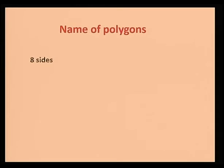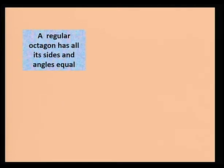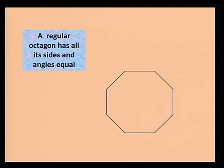A polygon with eight sides is called an octagon. This is an octagon. A regular octagon has all its sides and angles equal — you can see here all the sides and angles are equal.